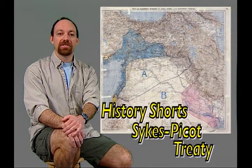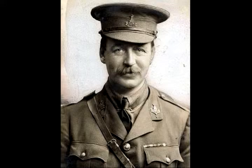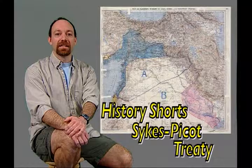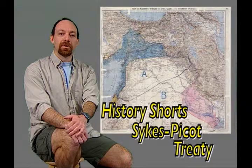From November 1915 to March 1916, the diplomats, led by Britain's Sir Mark Sykes and Frenchman Georges-François Picot, secretly negotiated future spheres of influence in the area. Both Britain and France were more concerned with protecting their own interests than with the historical and cultural realities of the region. As a result, the treaty and map that resulted largely ignored the situation on the ground.